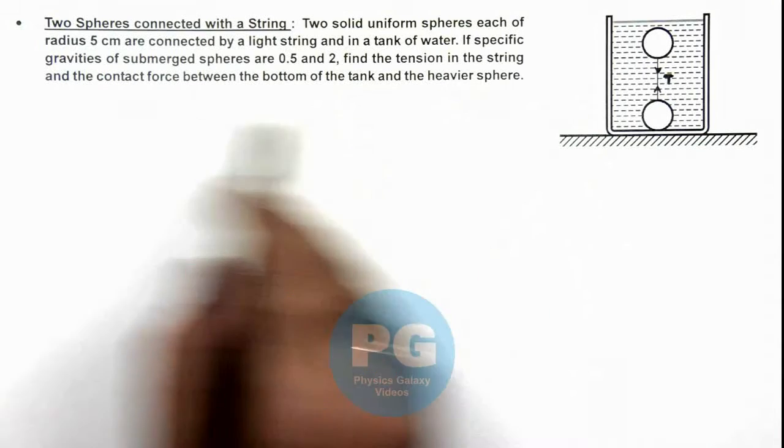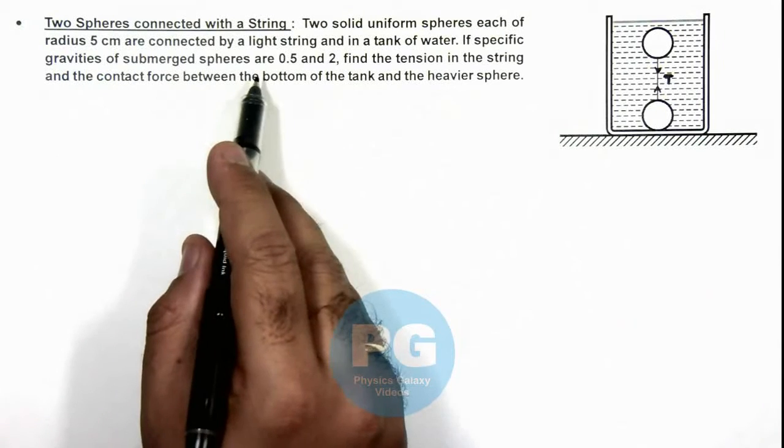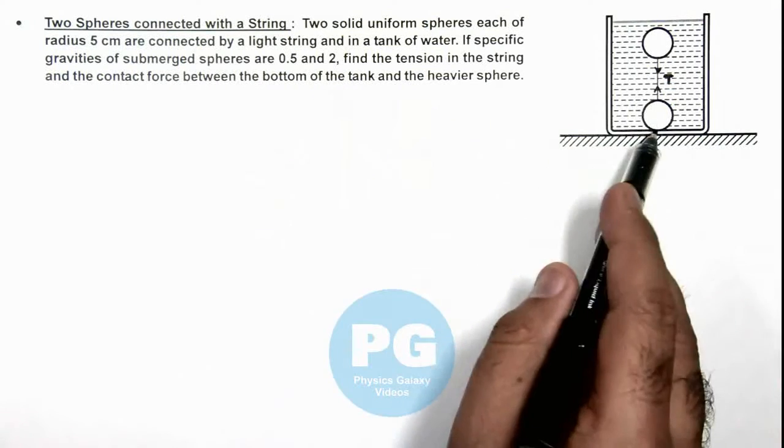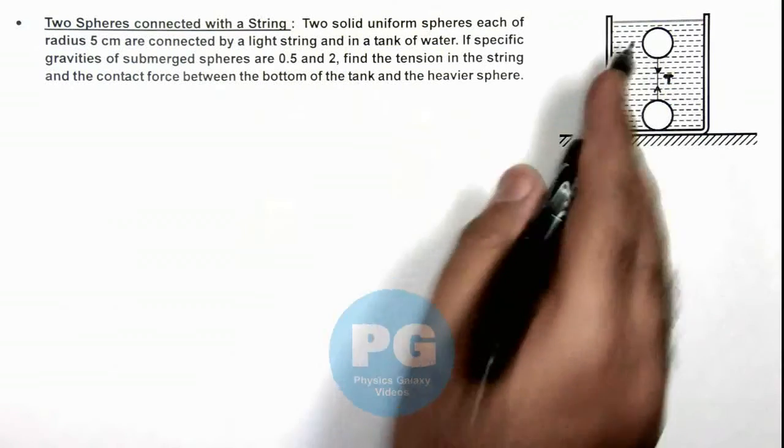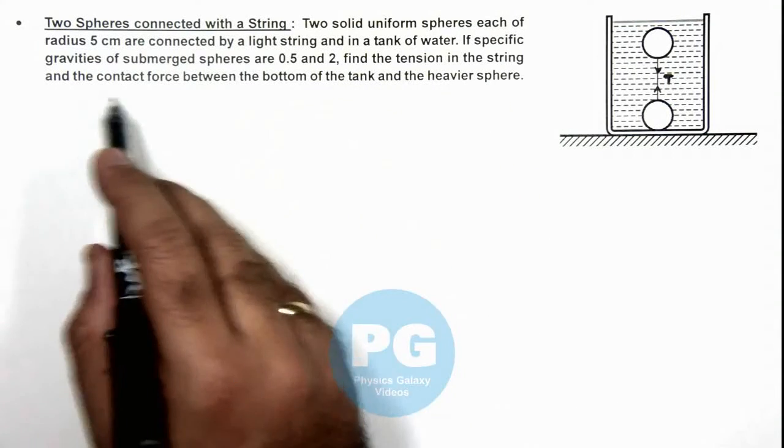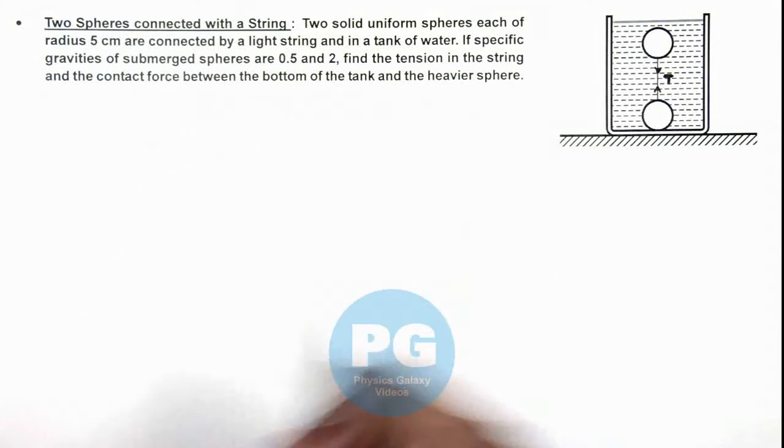If specific gravities of submerged spheres are 0.5 and 2, then obviously the heavier one would be lower one and the lighter one will be upper one. We are required to find the tension in the string and the contact force between the bottom of tank and the heavier sphere.